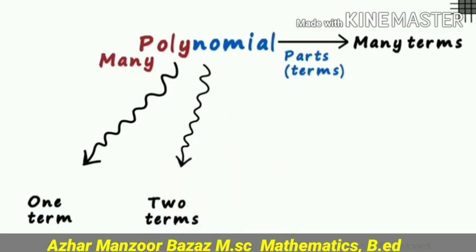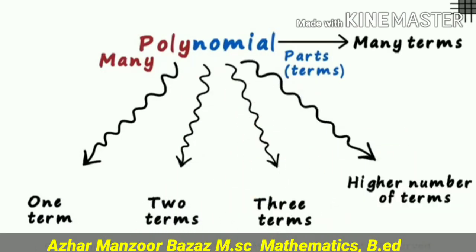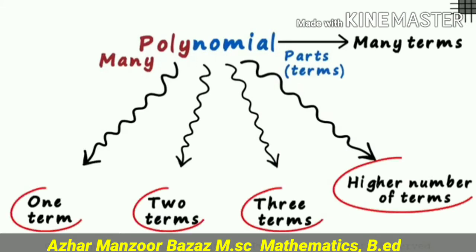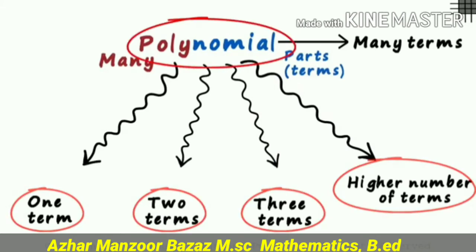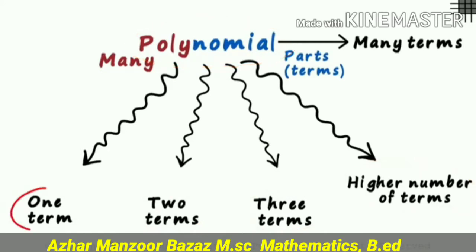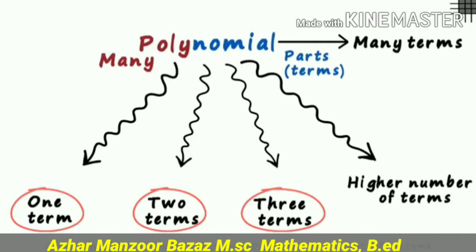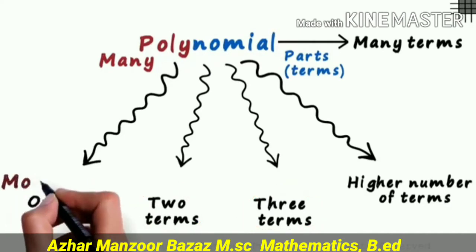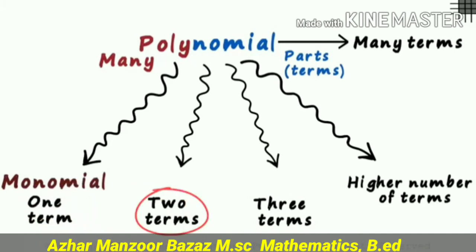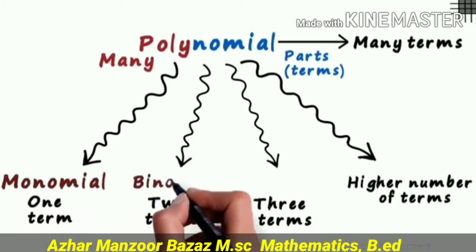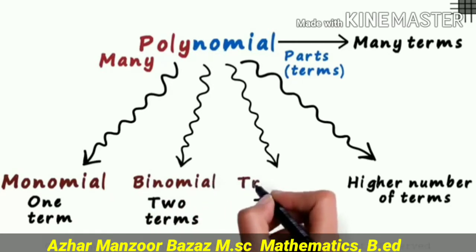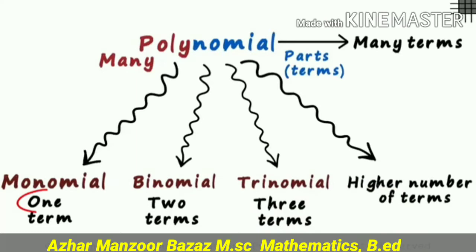A polynomial may contain one term, two terms, three terms, or a higher number of terms. There is a special name for each: one term is known as a monomial, two terms is known as a binomial, and three terms is known as a trinomial.